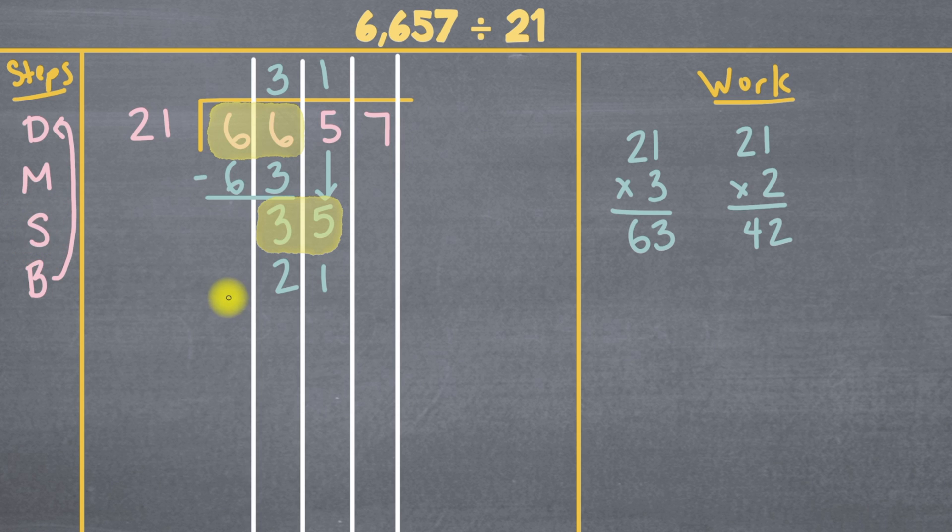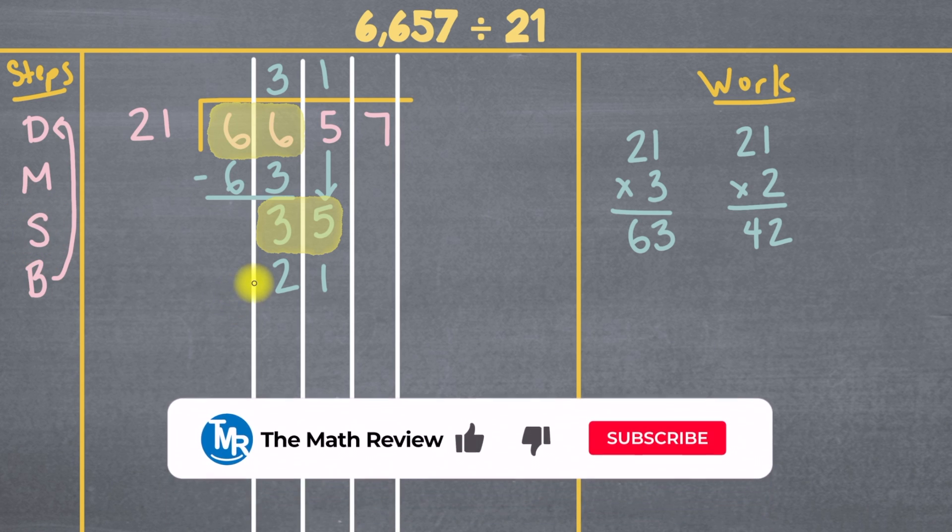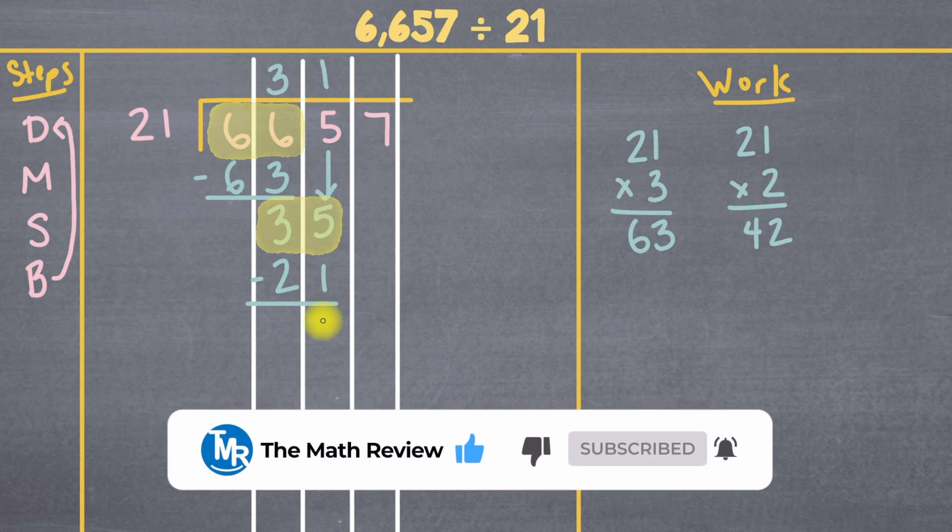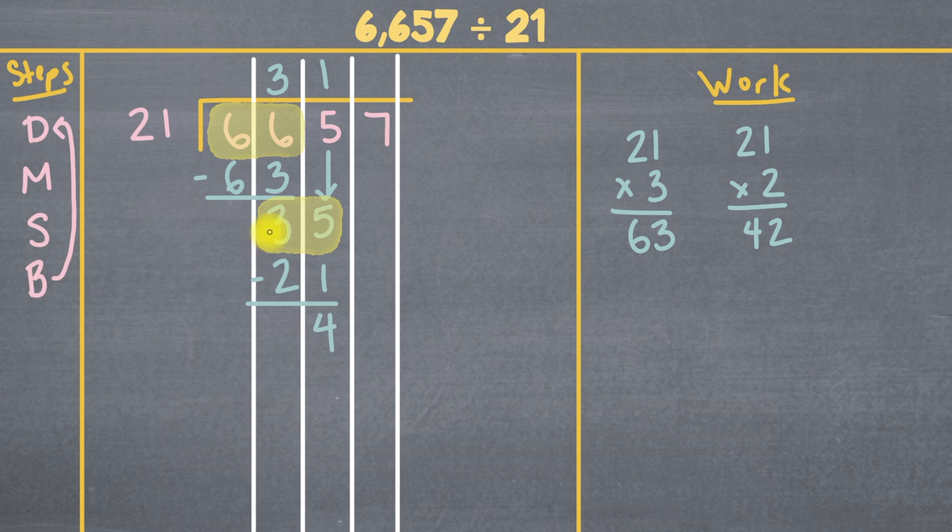Now we're at S, which means we have to subtract. So I'll put a minus sign and then subtract. 5 minus 1 is 4, and 3 minus 2 is 1. Now we're at B, which means to bring down. But what are we bringing down? Well, we're bringing down the number in the next column to the right. So we're going to bring down this 7.